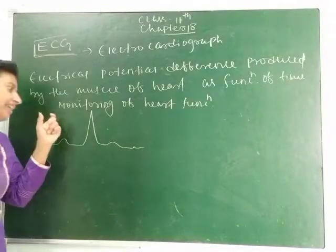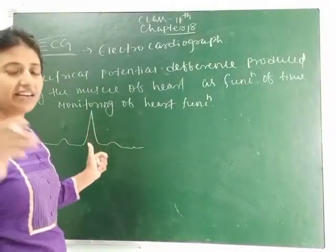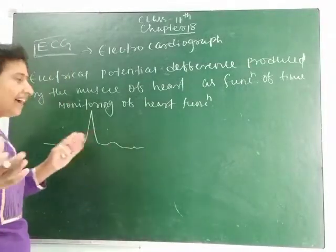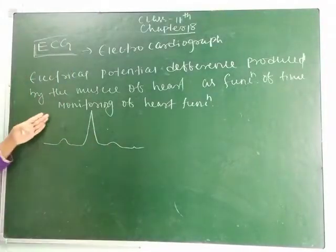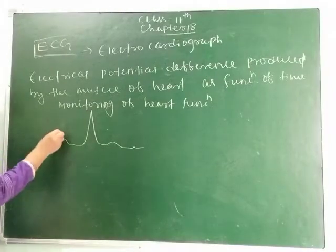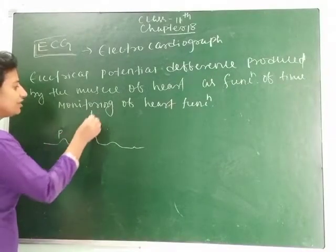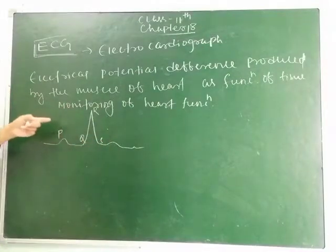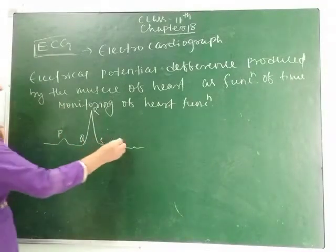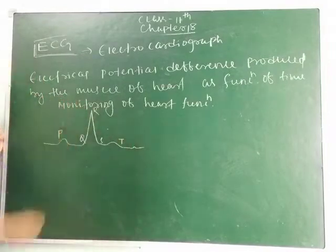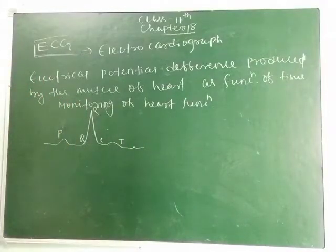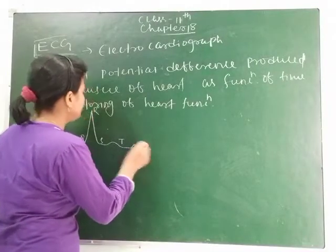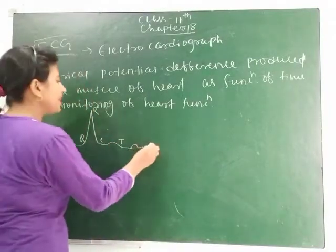This graph represents the excitation — or we can say the depolarization and repolarization — of the atria and ventricles. The points on the graph are named P, Q, R, S, and T.